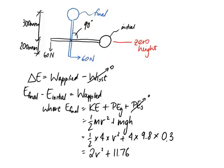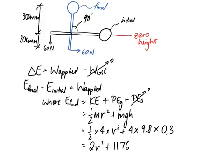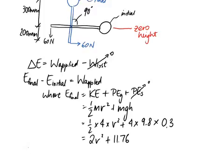You can simplify this to become 2v squared plus 11.76. Next we need to look at what's happening with the initial energy in our system. We know that the initial energy again has to be made up of kinetic energy, potential energy due to gravity, and potential energy due to any springs.